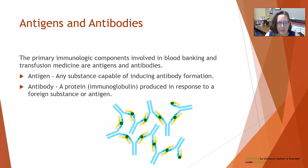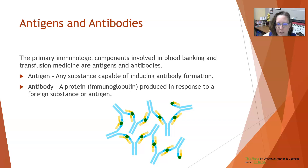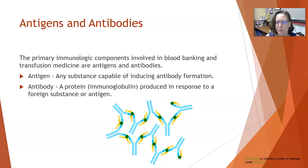Let's talk about the concepts of antigens and antibodies. The primary immunology components involved in blood banking and transfusion medicine are antigens and antibodies. An antigen is any substance capable of inducing antibody formation. Those antigens can be things like viruses, bacteria, or even food sensitivity molecules like gluten, gliadin, casein in dairy — basically, if you can make an antibody to it, then it's an antigen.